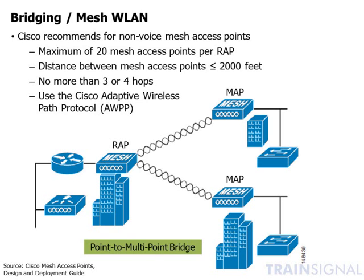A hop is defined as the connection from one access point to the next — from the root access point to a mesh access point is one hop, and from that mesh access point to another mesh access point is a second hop. The protocol used for communication between mesh access points is a Cisco proprietary protocol called the Adaptive Wireless Path Protocol (AWPP).